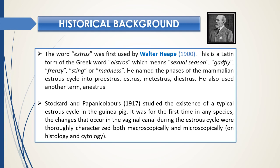The word 'estrus' was first used by Walter Heap as far back as 1900. It is the Latin form of the Greek word 'Oistros,' which means sexual season, gadfly, frenzy, sting, or madness. He named the phases of the mammalian estrus cycle for the first time: proestrus, estrus, metestrus, and diestrus. He also used another term, 'anestrus,' meaning no cycle and no estrus activities.